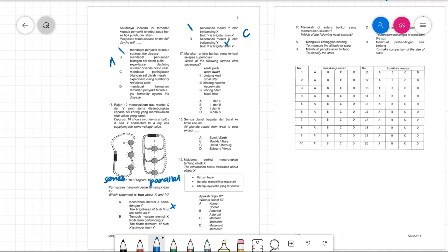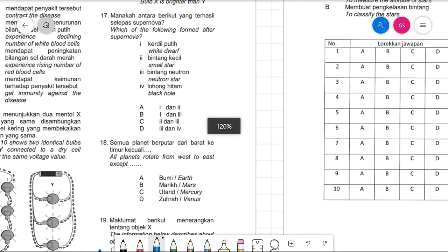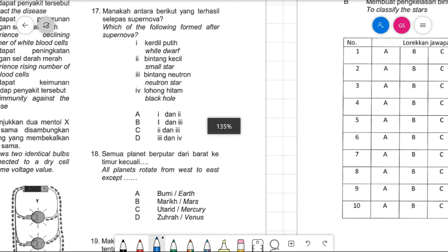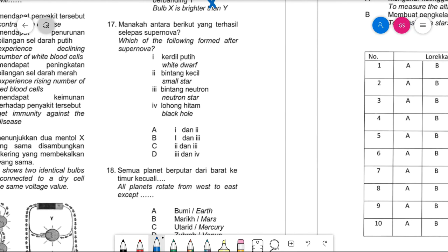Number seventeen asks about the forms produced after a supernova explosion. After a supernova, it will create a white dwarf and then a neutron star — not a small star or black hole. Answer is one and three — B.